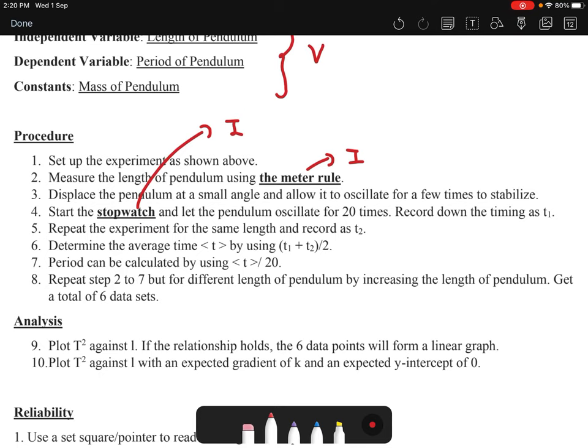Last but not least, step number eight, I just say repeat step two to seven but for different length of the pendulum by increasing the length of the pendulum. So this is the last step for the procedure, and I say get a total of six data sets. So this is important.